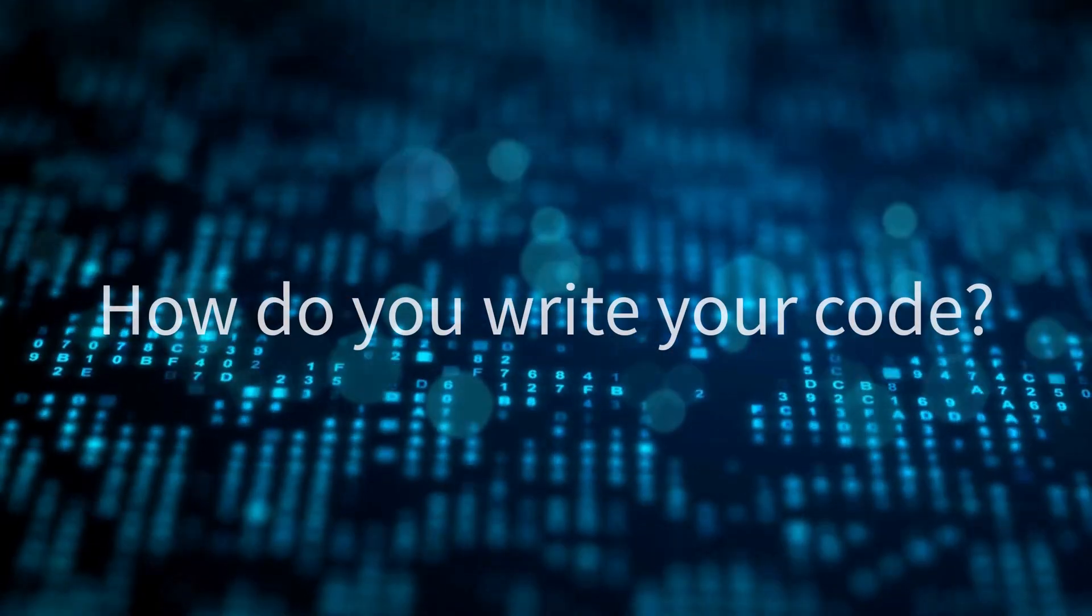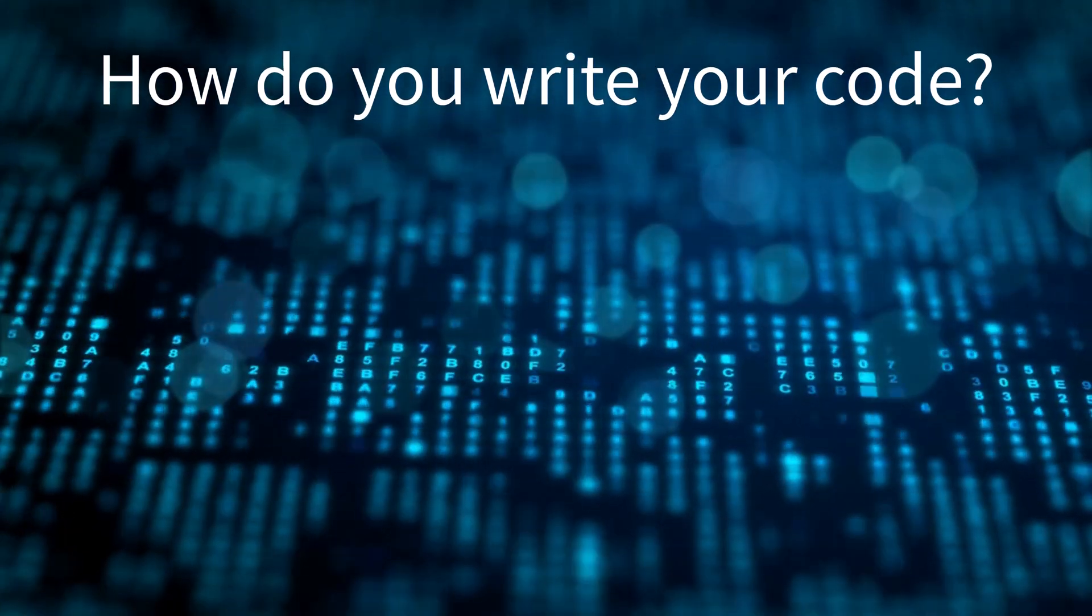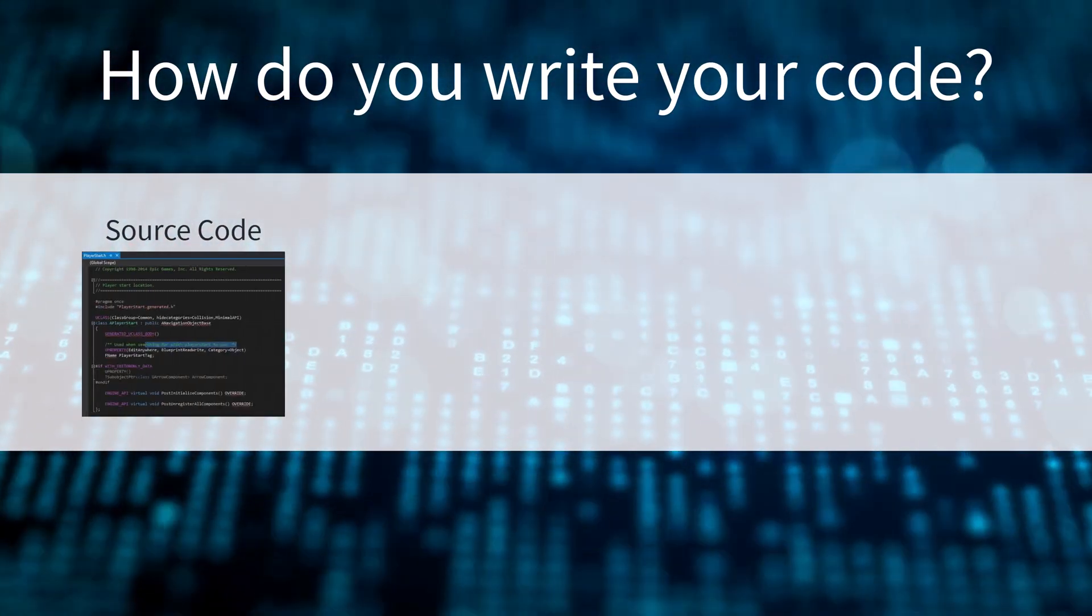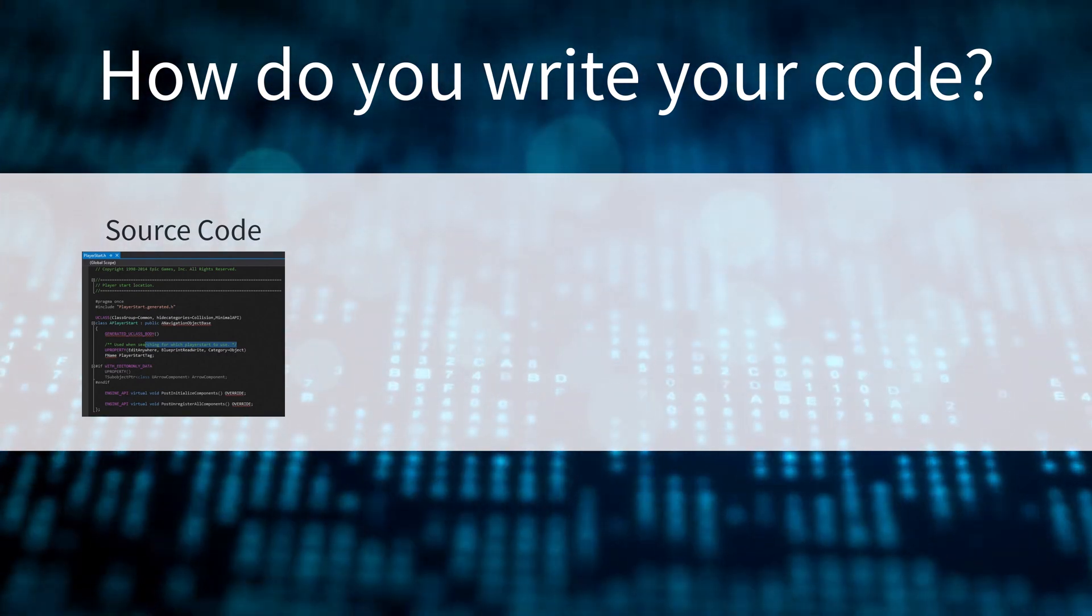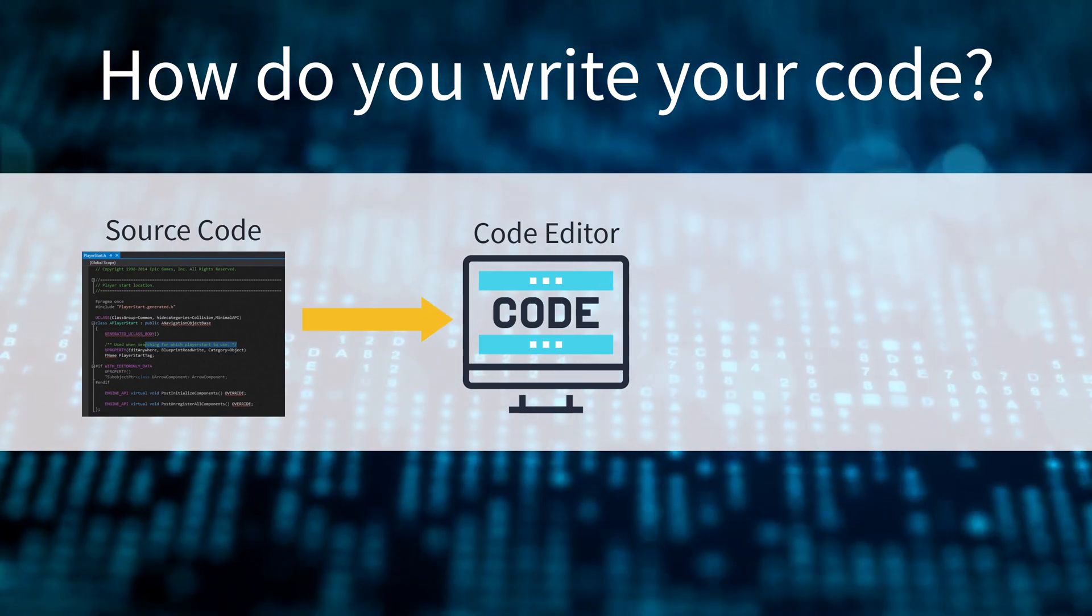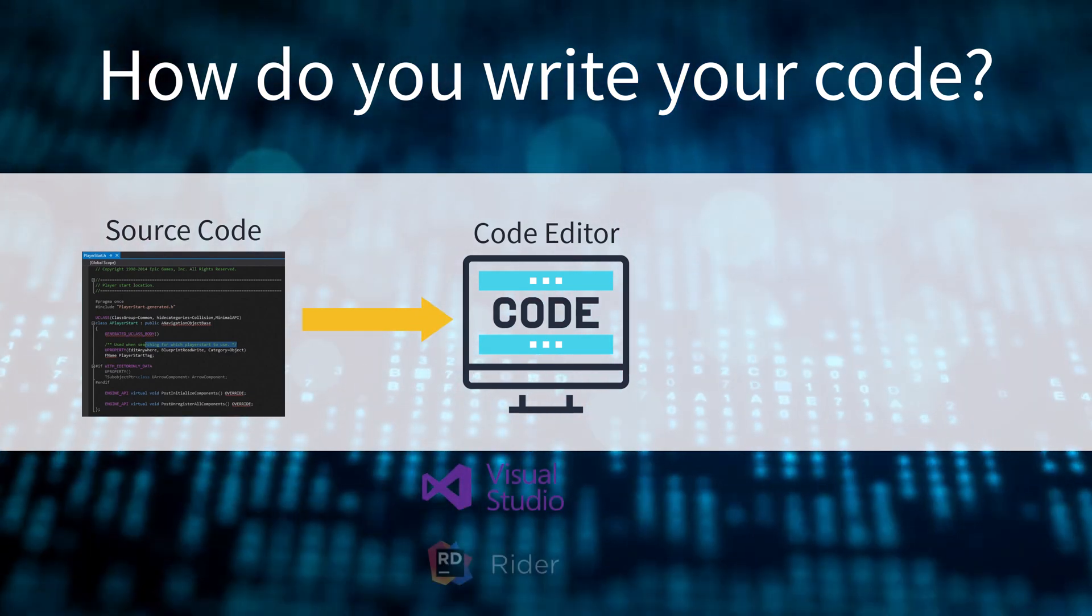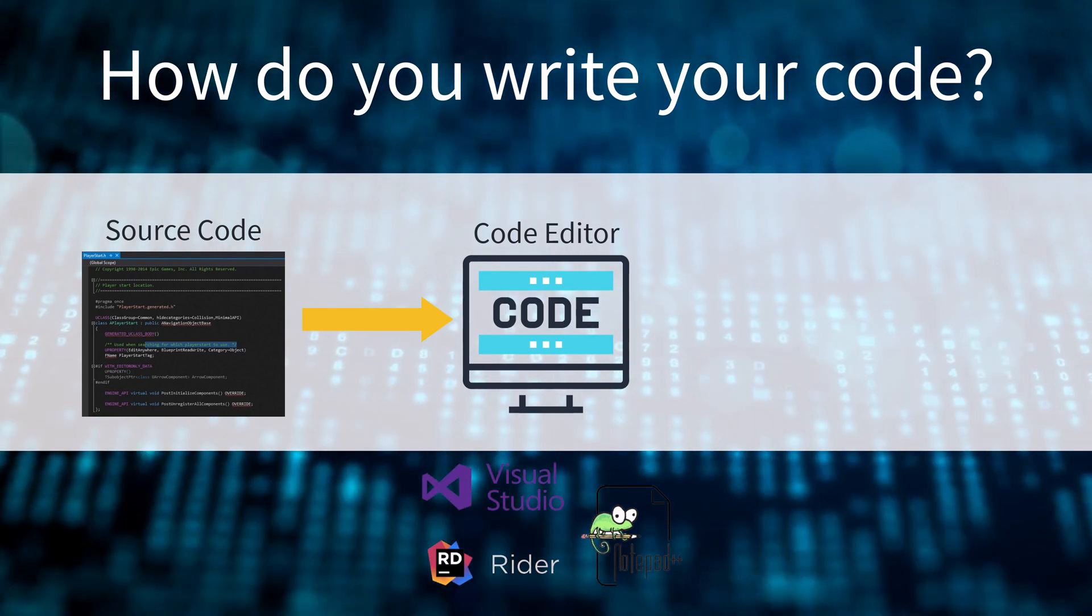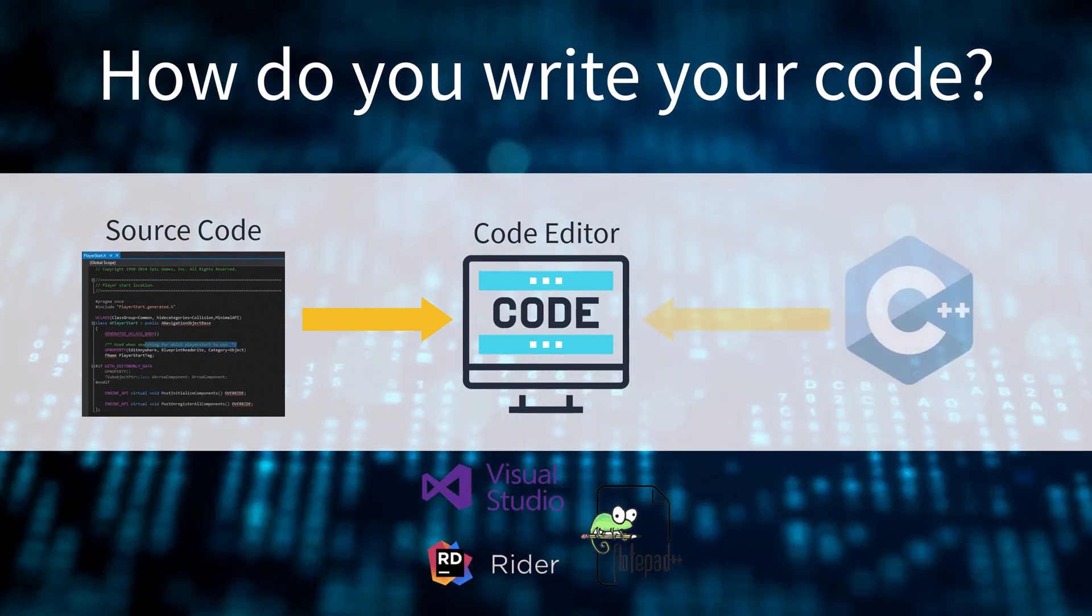So how do you actually write your code? The code you write is known as source code and it's made to be human readable. You write this code inside a code editor, such as Visual Studio, Rider, or even Notepad++. This is the case when writing code in C++.